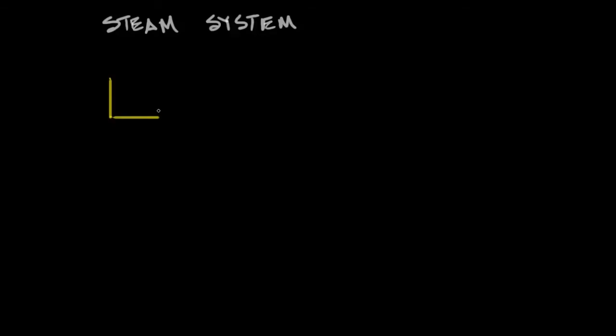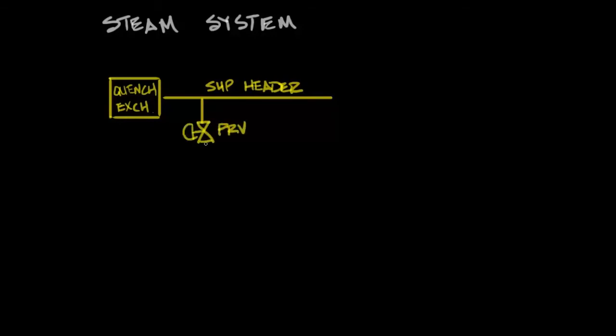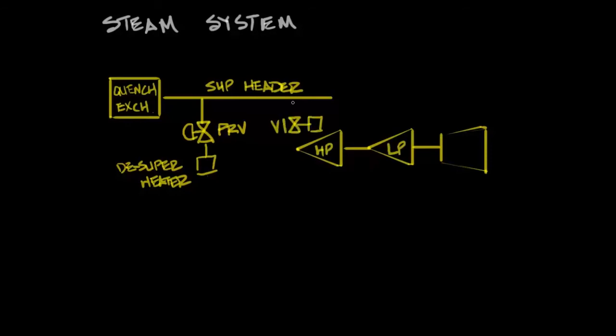Let's take a look at what our steam system looks like. We'll draw the quench exchanger just as a simple box. Out of that box comes the super high pressure steam. On that header will be some kind of a pressure reducing valve to dump off excess steam if the turbine can't handle it. But most of the steam if not all is going to go through V1 of the crack gas compressor. That'll be a two section extraction turbine with V1 handling the 100 bar steam and then extracting steam to the high pressure header which is usually around 40 bar.